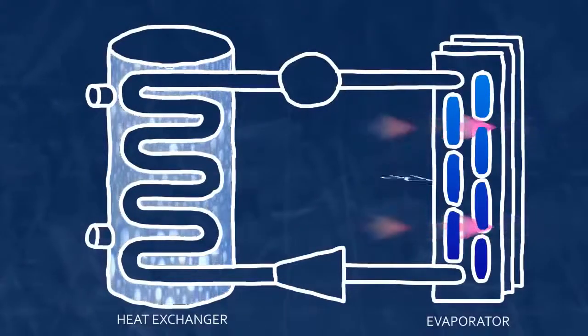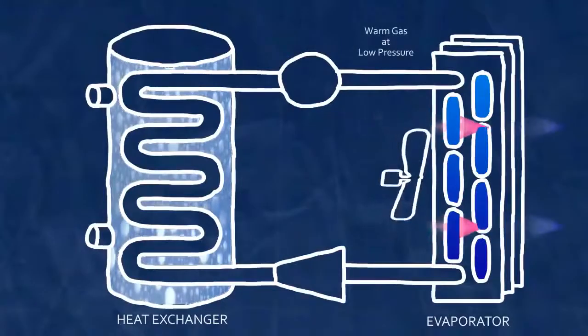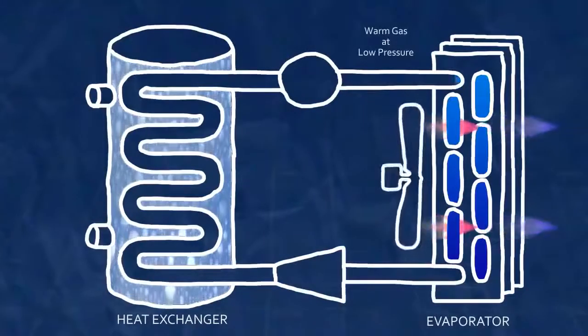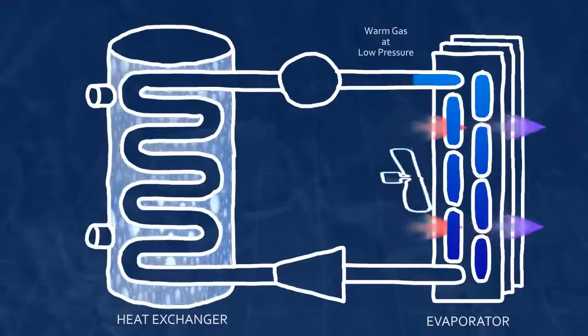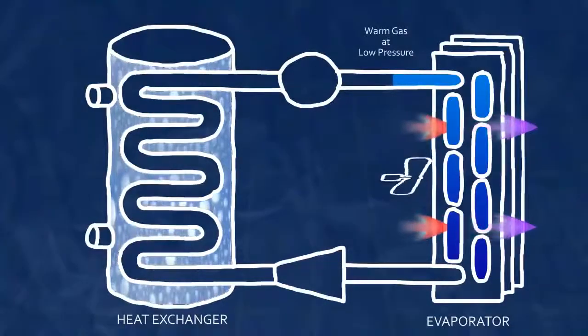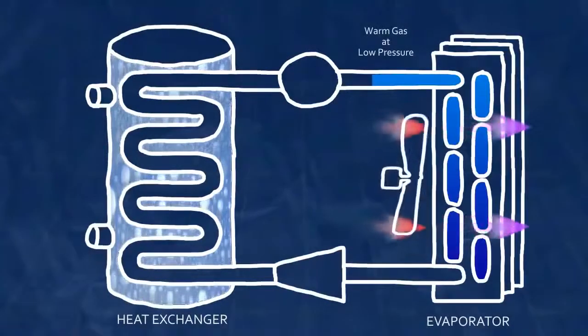Once it's passed through the evaporator, the refrigerant is a warm gas, the cold liquid having been warmed and vaporized by the room air. The refrigerant is still not hot enough to heat water, however, so that's where the compressor comes in.